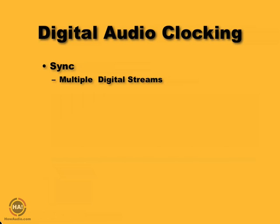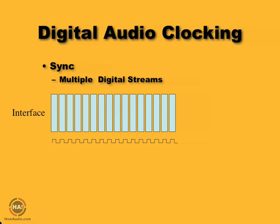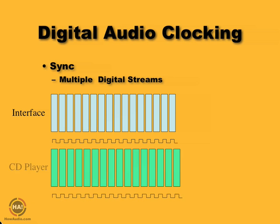Things get more complicated when we have multiple digital devices connected together. In our previous example, we've got our audio interface happily playing away, clocked by its own internal digital clock. What if we add a CD player with a digital output? The CD player's clock is ever so slightly slower than the interface's clock, so the CD player's last sample is kind of hanging off the edge — it didn't arrive at the same moment in time as the interface's last sample.